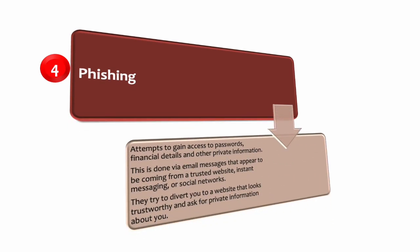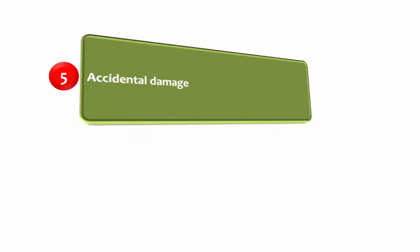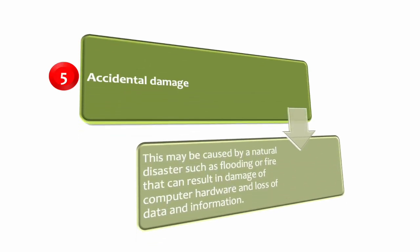Phishing refers to attempts to gain unauthorized access to passwords, financial details, and other private information. Phishing is done via email messages that appear to be coming from a trusted website, instant messaging, or social networks. They try to divert you to a website that looks trustworthy and ask for private information about you.